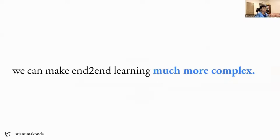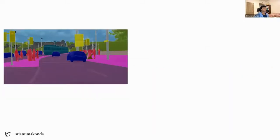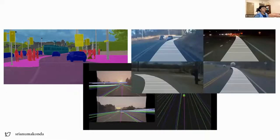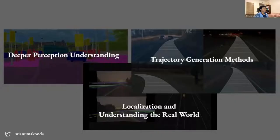I'll spend the next 15 to 20 minutes talking about how we can make end-to-end learning much more complex. I'll dive into perception complexities, getting a better understanding of the real world through localization and GNSS information, and how we can take trajectory and control outputs to actually drive cars in the real world. I'll start with the perception side and then dive into localization and trajectories.